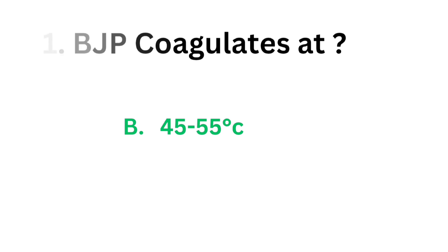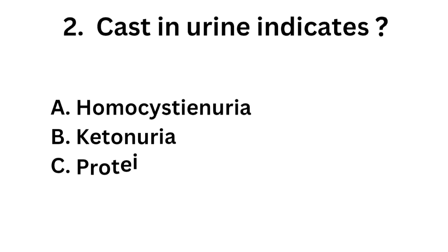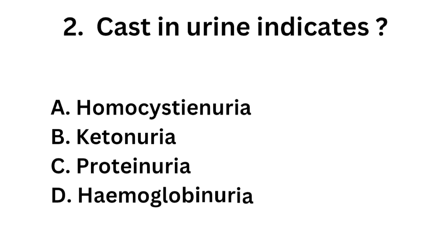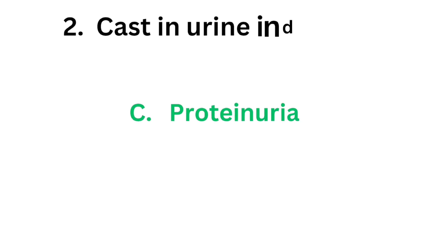BJP (Bence Jones Protein) is an abnormal protein that appears in urine in multiple myeloma, which coagulates and precipitates at a temperature of 45 to 55 degree Celsius. Question number two: casts in urine indicate — option A: homocystinuria, option B: ketonuria, option C: proteinuria, option D: hemoglobinuria. Casts are collections of protein and cellular debris in a kidney tubule, so the correct answer is option C, proteinuria.